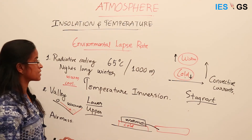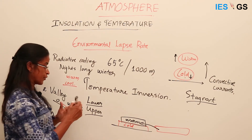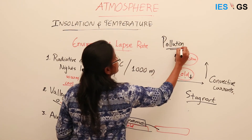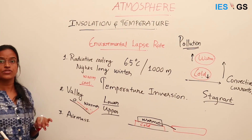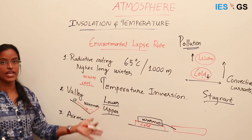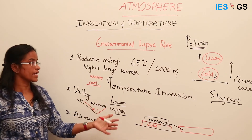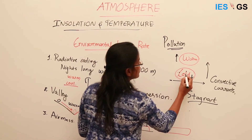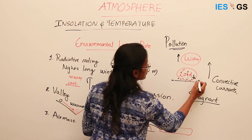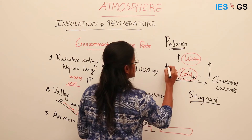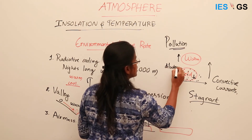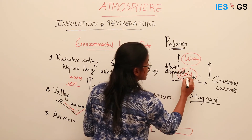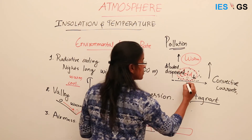Temperature inversion has a relation with pollution. Temperature inversion does not allow vertical mixing or diffusion of air. This means pollutants present in the cold air mass remain on the surface without getting diluted or dispersed. As a result, pollutants accumulate on the surface and increase pollution levels.